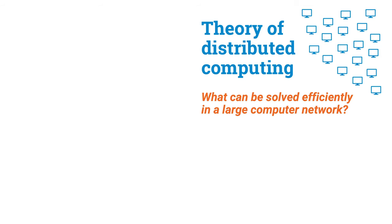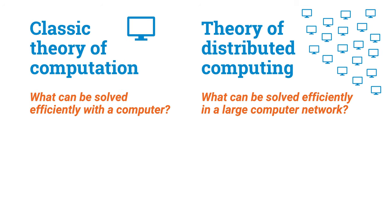One of the fields that studies such foundational questions is the theory of distributed computing. In the theory of distributed computing, the key question is: what can be computed efficiently in a large computer network? It is useful to contrast this with the classic theory of computation, where the key question is what can be solved efficiently with a single computer.